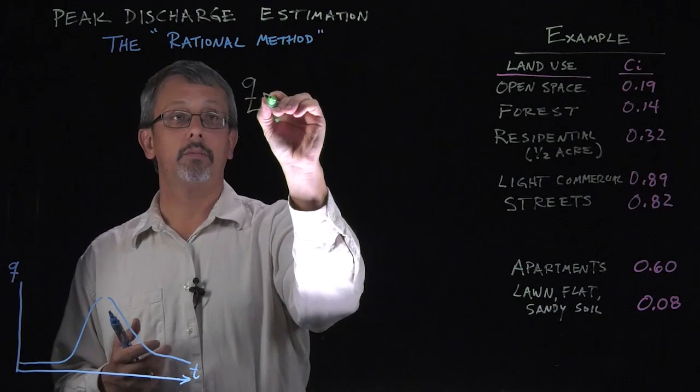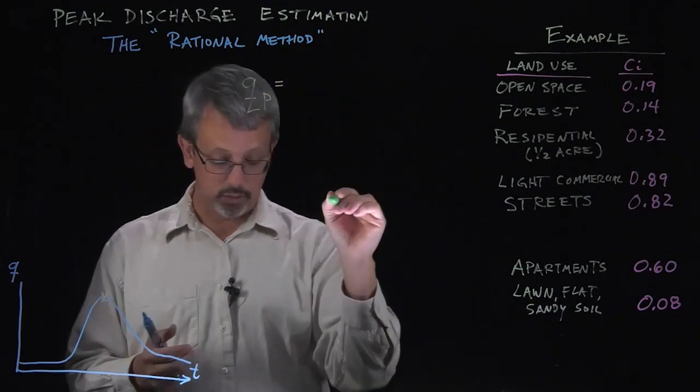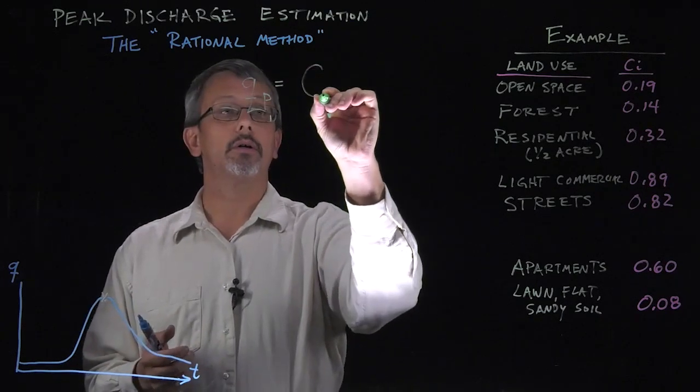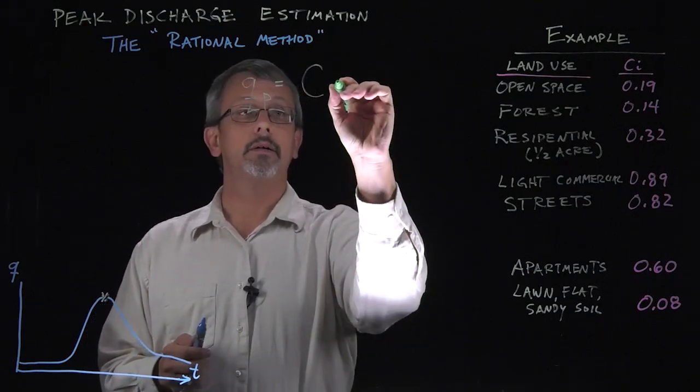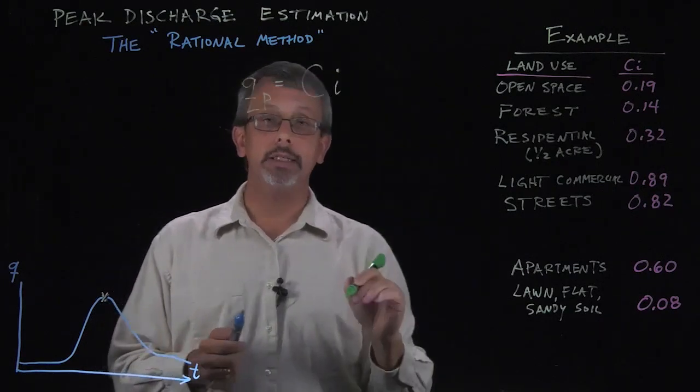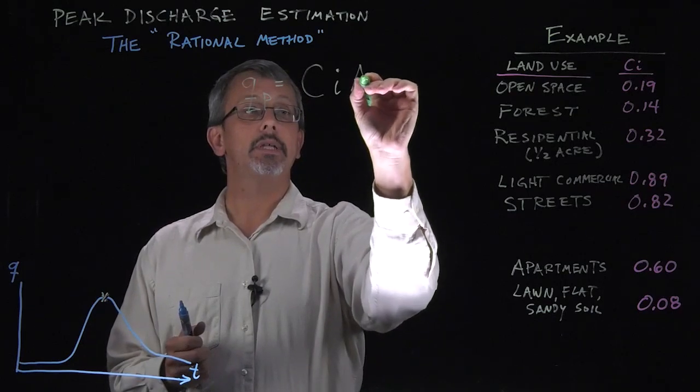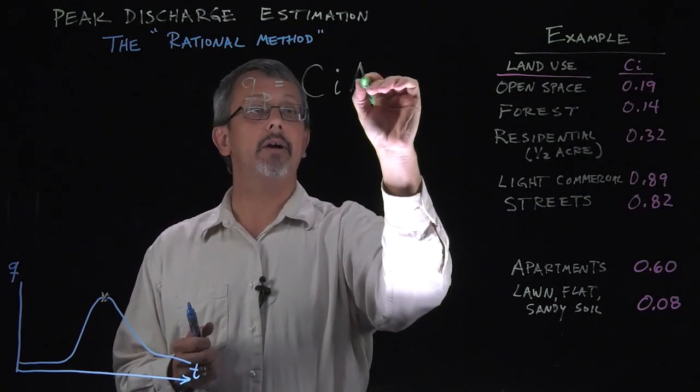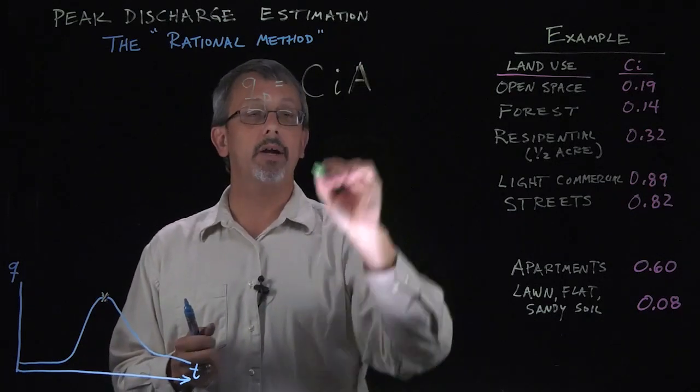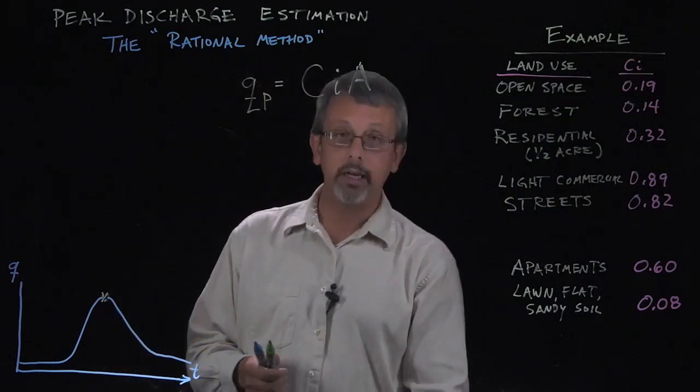q, there's our peak discharge, is equal to some constant c times the rainfall intensity i times the area a, and this area is the area of the watershed or the area that we're considering that the rain is falling on.